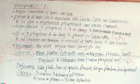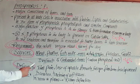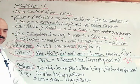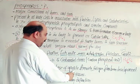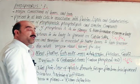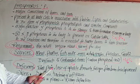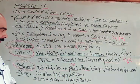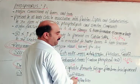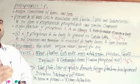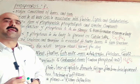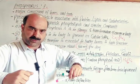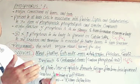Deficiency of phosphorus causes joint pain, loss of appetite, fatigue, anxiety, and poor bone development in children. In children, deficiency can lead to rickets — a disease causing bowing of the arms and legs due to weak bone development.